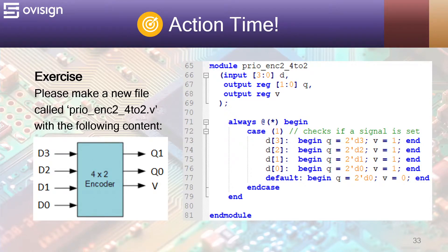And now it's action time. In this exercise we are going to design the same 4-to-2 encoder as in the previous action time, but using a different coding style.